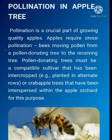Pollination in apple tree. Pollination is a crucial part of growing quality apples. Apples require cross-pollination, with bees moving pollen from a pollen-donating tree to the receiving tree. Pollen-donating trees must be a compatible cultivar that has been intercropped, for example planted in alternate rows, or crab apple trees that have been interspersed within the apple orchard for this purpose.